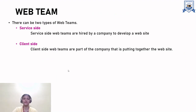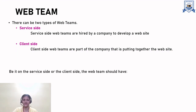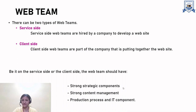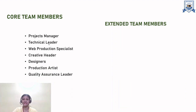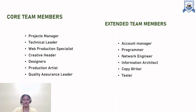The web team. There are two types of web teams: service side and client side. Service-side web teams are hired by a company to develop a website, whereas client-side web teams are part of the company putting together the website. The web team should have strong strategic components, strong content management, production process, and IT components. The core team includes project managers, technical leader, web production specialist, creative header, designers, production artist, and quality assurance leader. The extended team includes account manager, programmer, network engineer, information architect, copywriter, and tester.